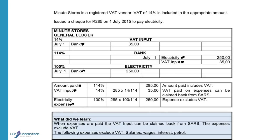Therefore, we have to calculate and see what is the amount for VAT and what is the amount for the electricity expense that will reduce our profits. The total amount is equal to 114% because it includes the electricity expense plus the VAT, and this total amount is 285 Rand.